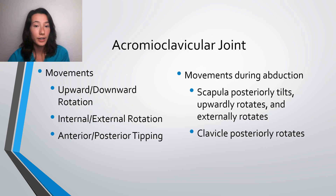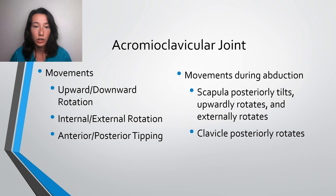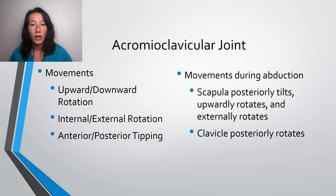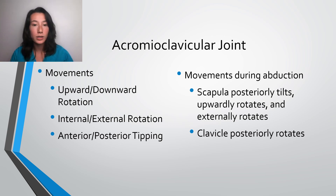Now let's talk about the acromioclavicular joint. Movements that can occur at this joint — and just so you understand, this could be flexion, it doesn't have to just be abduction, it could be internal or external rotation, whatever it is. These are the potential movements: upward and downward rotation, internal and external rotation, along with anterior and posterior tipping. So during shoulder abduction, what happens at this specific joint includes the scapula posteriorly tilting, the scapula will upwardly rotate, and it will externally rotate. The clavicle will posteriorly rotate.